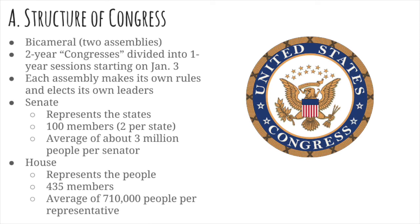Congress is divided into two assemblies, a House and a Senate. They meet in what are called two-year Congresses. Each one has a one-year session starting on January 3rd. Both of the assemblies make their own rules and choose their own leaders.